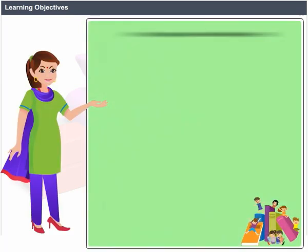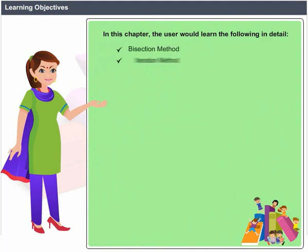Learning Objectives. In this chapter, the user would learn the following in detail: Bisection Method, Iteration Method, and Newton-Raphson Method.